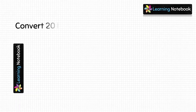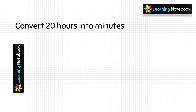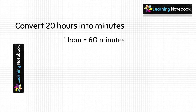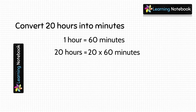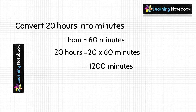The next question is: convert 20 hours into minutes. We know one hour equals 60 minutes, so 20 hours would be equal to 20 multiplied by 60, which equals 1200. So 20 hours equals 1200 minutes.